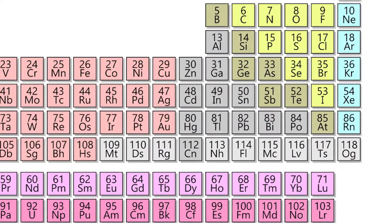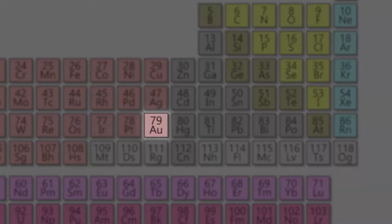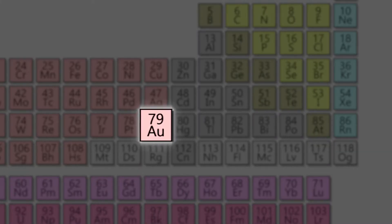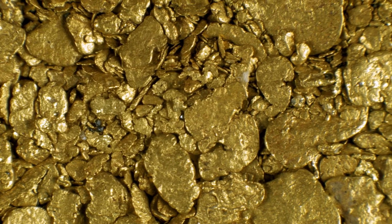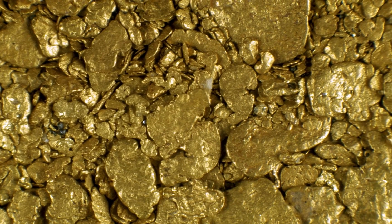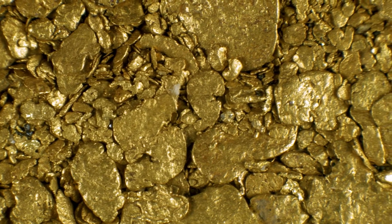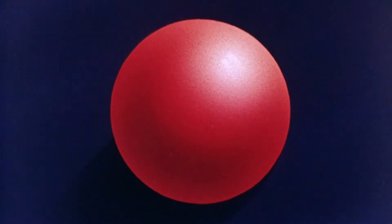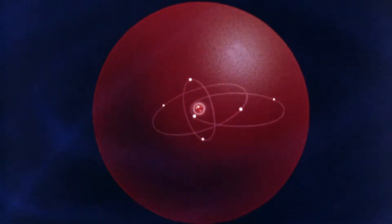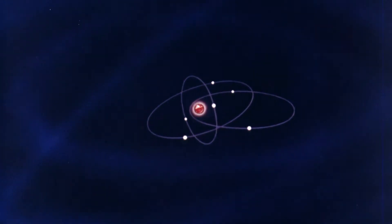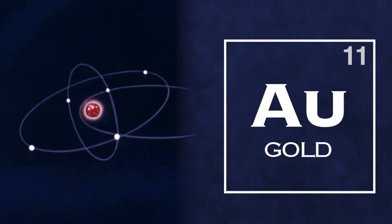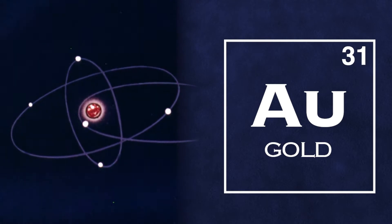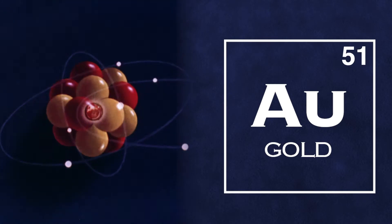Gold is a chemical element with the atomic number 79 on the periodic table. It has one of the highest atomic numbers of any element that occurs naturally. An atomic number measures the number of protons contained in the nucleus of each atom comprising an element. The higher an element's atomic number, the heavier it will be.